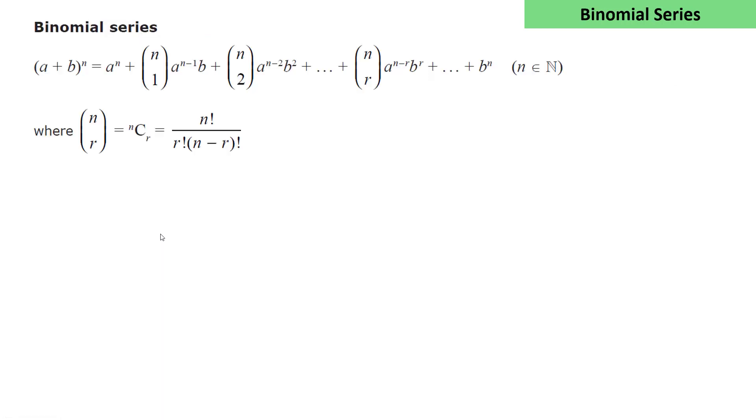The next formula is the binomial series. In the expression for the binomial series, they use the column vector form of the nCr notation, which is used on your calculator.